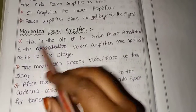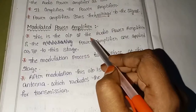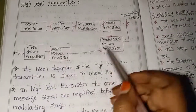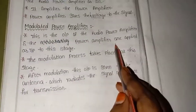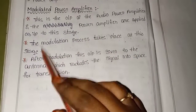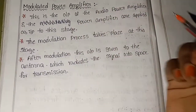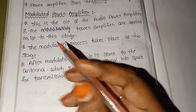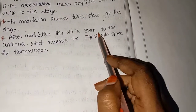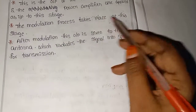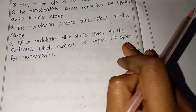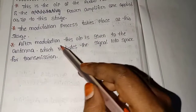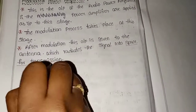The outputs of the audio power amplifier and power amplifier are applied as input to the modulating power amplifier. The modulating process takes place at this stage — the combination of the message signal and the carrier signal is called modulation. After modulation, the output is given to the antenna, which radiates the signal into space for transmission.